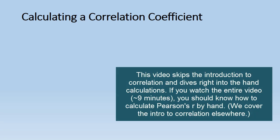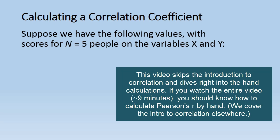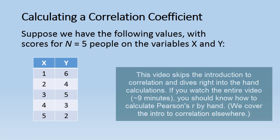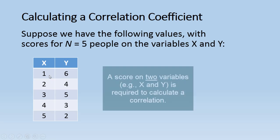Now let's take a look at calculating a correlation coefficient. Suppose we have the following values with scores for five people on the variables X and Y. It's a small example because we're going to calculate this by hand, so I want to keep it relatively simple. For example, the first person has a score of 1 on X and a score of 6 on Y. The second person 2 on X, 4 on Y, and so on. So we have five different people here, and the five people produced a score on both X and Y.